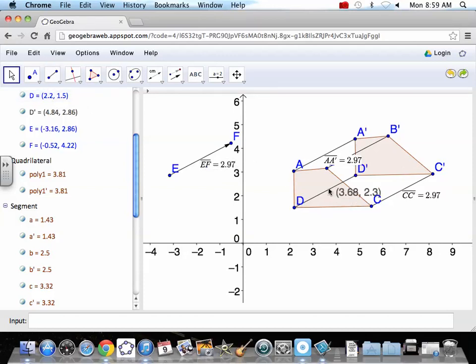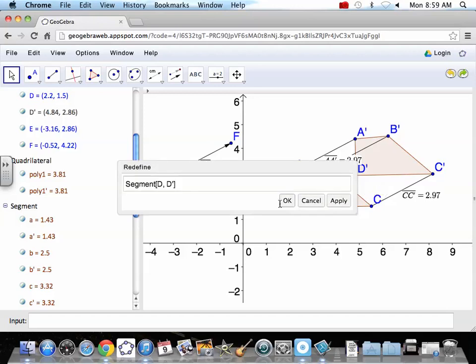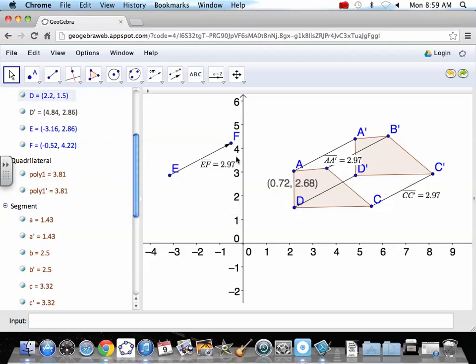We need to make it hidden. Double-click on that line. Oh, the properties don't show up in this. Well, in the software that you download, you can make D to D prime a dashed line.